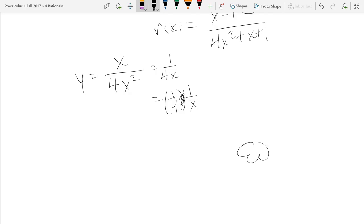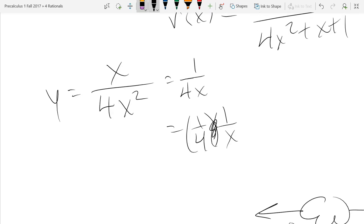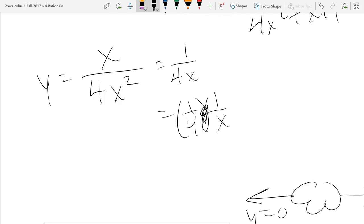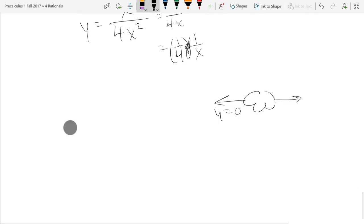So we have a horizontal asymptote, and this one was y equals 0. So another way to think about it, what happens to 1 over x when x is really big? 1 over x gets really small. So this is going to go towards 0 on both sides. Now we're going to take all this information and turn it into one graph.